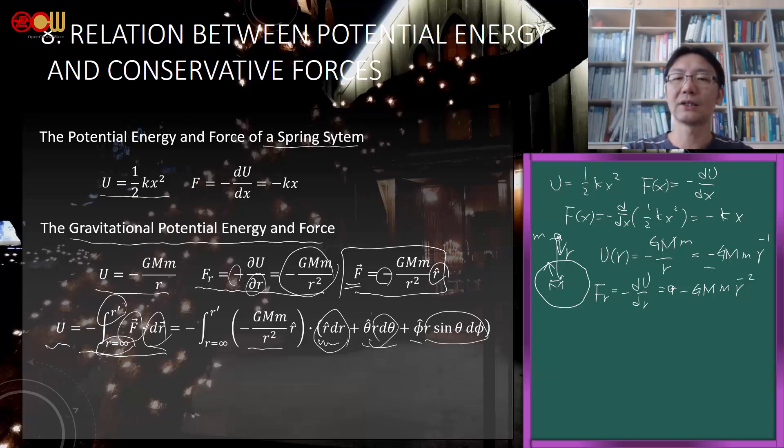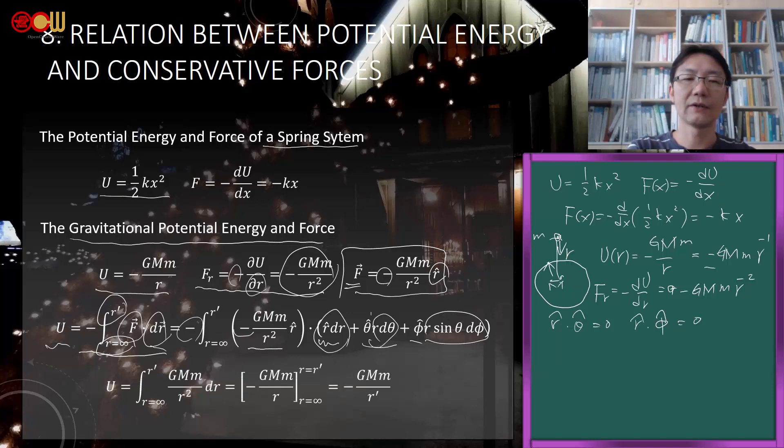The tricky part is the dR⃗ vector uses spherical coordinates, which we'll learn later. It's actually simple here - you only care about the r direction which is dr. The other directions are r dθ and r sinθ dφ, but we don't use those. They're mutually perpendicular, so r̂ dotted with θ̂ equals zero, and r̂ dotted with φ̂ equals zero. This is also a type of orthogonal coordinate system - spherical coordinates. After the dot product, the two negatives give positive, plus GMm/r².